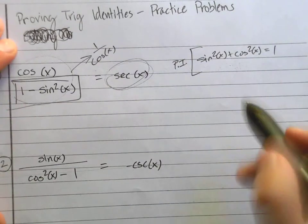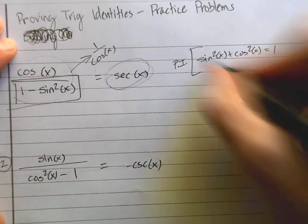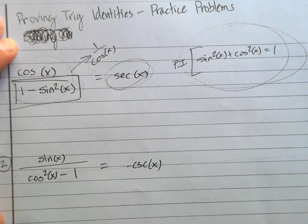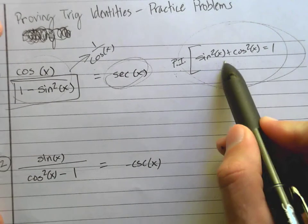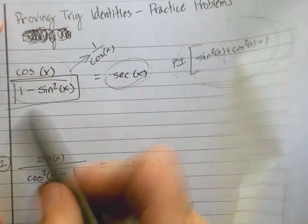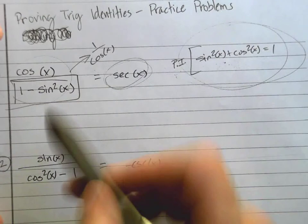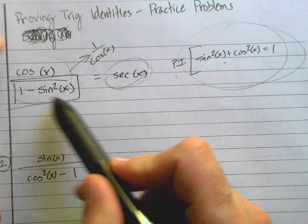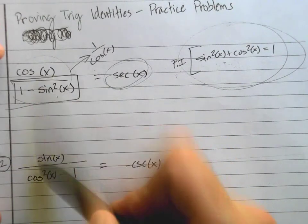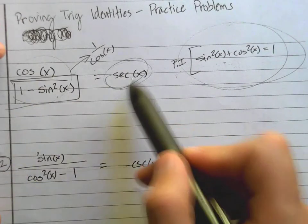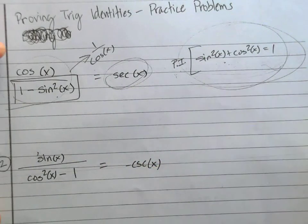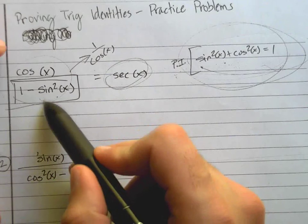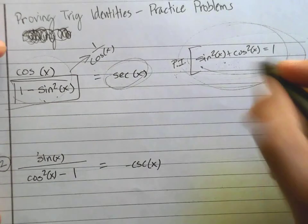I can move any of this stuff around because we've already proved this identity — we know it's true. I don't know the original equation is true yet, so I only work on the left side and show it equals the right side. Since I know the Pythagorean identity is true, I can rearrange it freely.